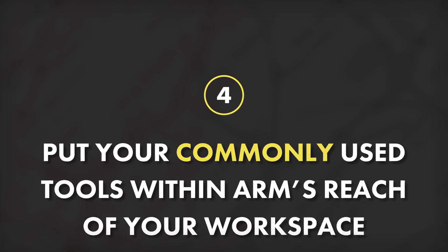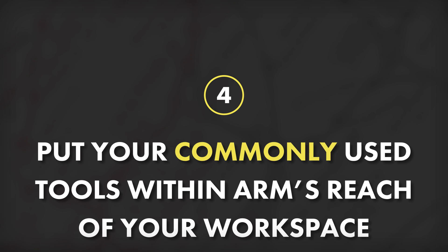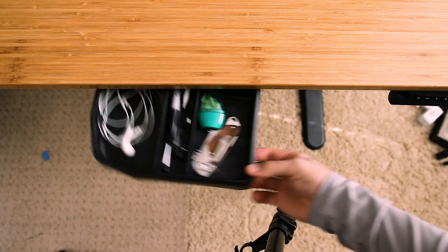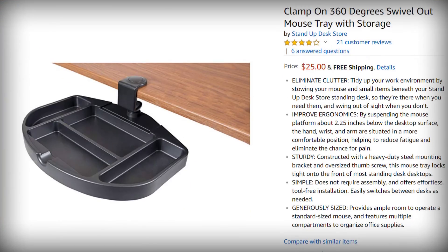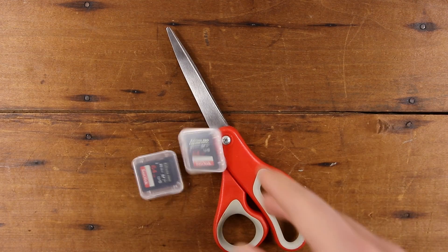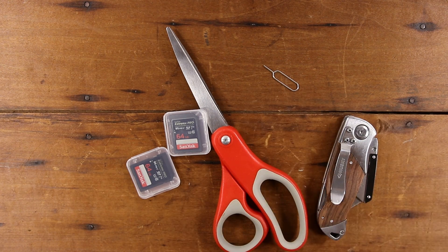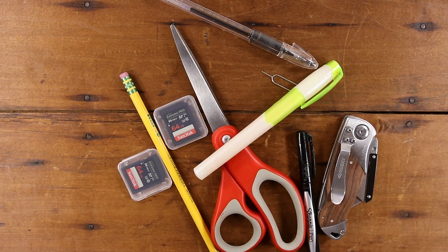We are now onto tip number four, and for this tip we briefly venture out of the computer into the real world: put any of your commonly used physical tools within arm's reach of your workspace. I'm using a swivel drawer that screws into the bottom of my desk — and there is now a clamp-on version, which is even more accessible. Within mine I've got scissors, SD cards, a pin for resetting devices, a box cutter, pens, pencils, highlighters, sticky notes, and all kinds of stuff I frequently reach for.